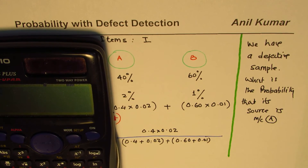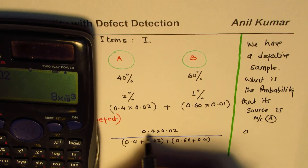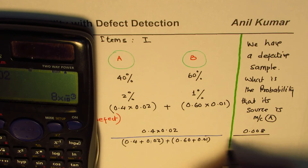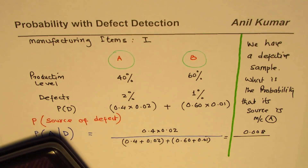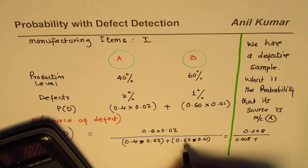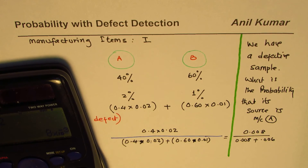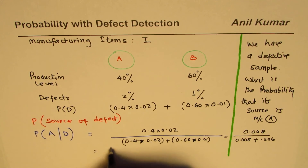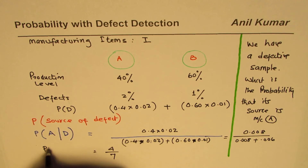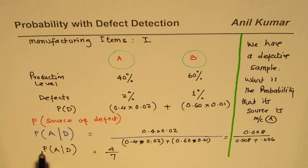Using the calculator: 0.4 times 0.02 gives 0.008, and 0.60 times 0.01 gives 0.006. So we divide 0.008 by the sum of 0.008 plus 0.006. That gives us 4 over 7. The probability that a defective piece came from machine A is 4 over 7. Given that a defective piece is selected, the probability it came from machine A is 4 over 7.